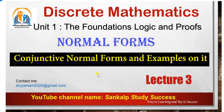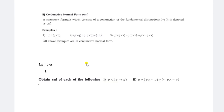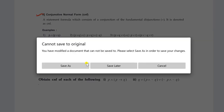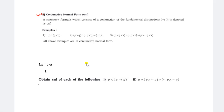Hi friends, welcome to Sankal Study Success Lectures. In this session I am going to explain about another form of normal forms. As of now I discussed Disjunctive Normal Forms and somewhat CNF also. But in this particular session I am going to explain about only Conjunctive Normal Forms, that is CNF, and examples on CNF. It is discussed in detail - what is CNF, you should know the formula and the definition.